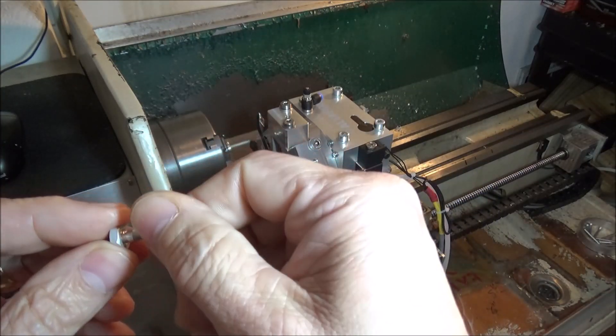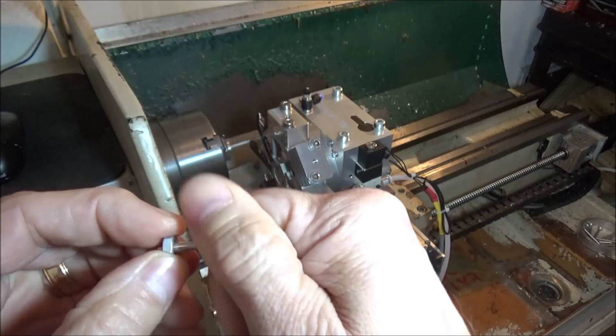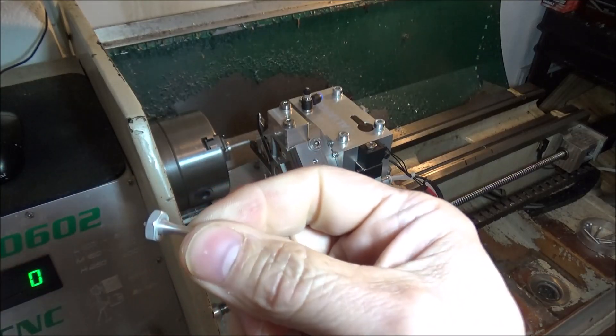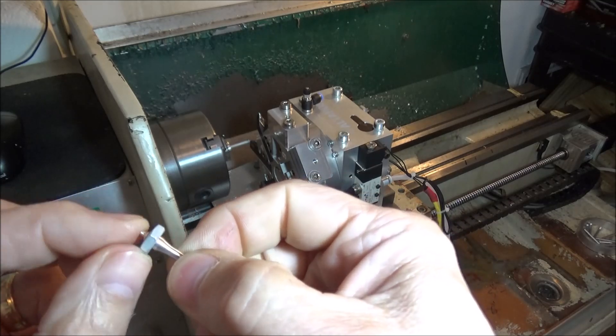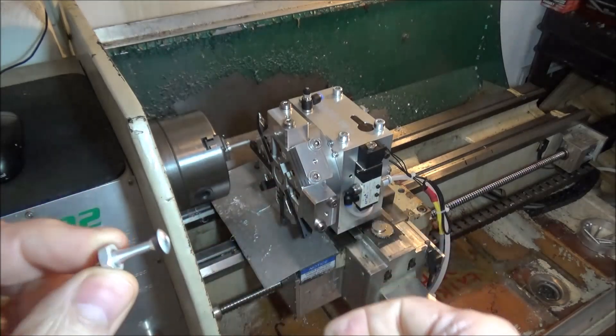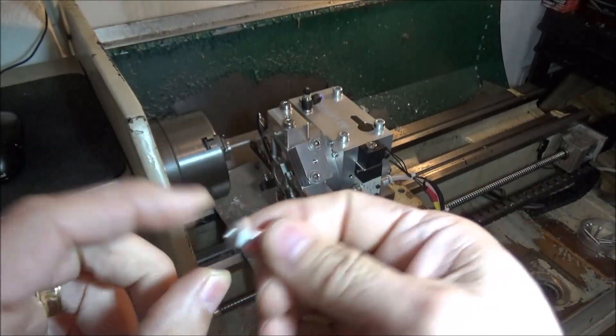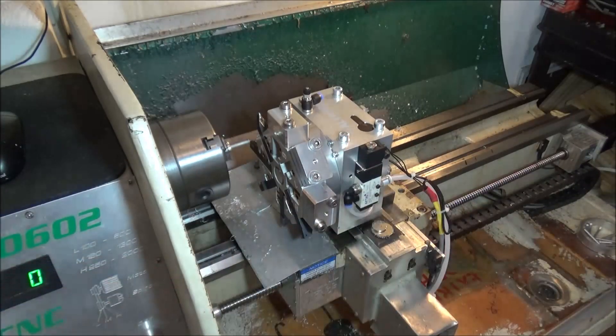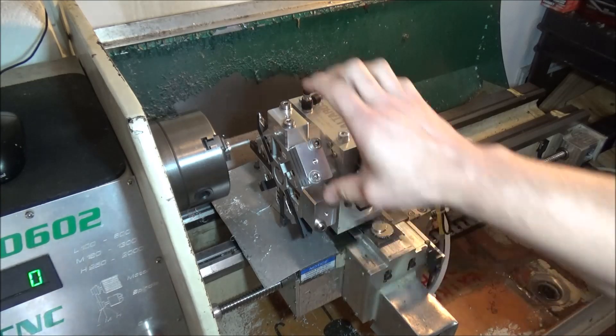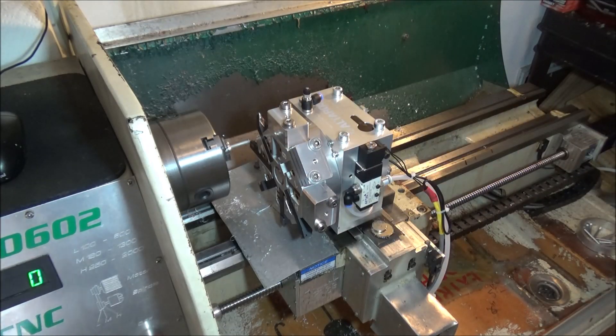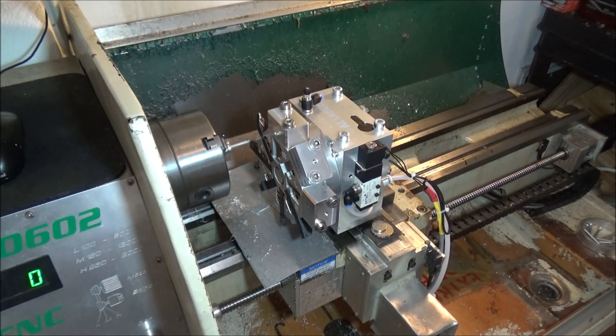You can see we've got this threaded. This is a 10-32, and I'll just nip that off there. But it turns out really well, really quick, and the turret saves me from having to do all three of those tool changes. So let's run this again.